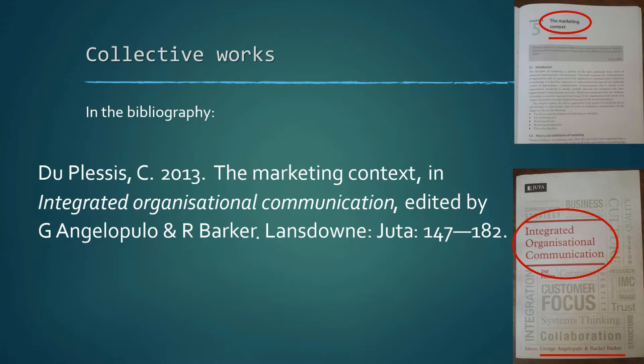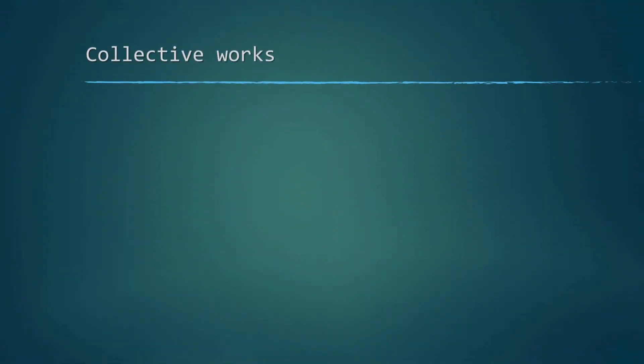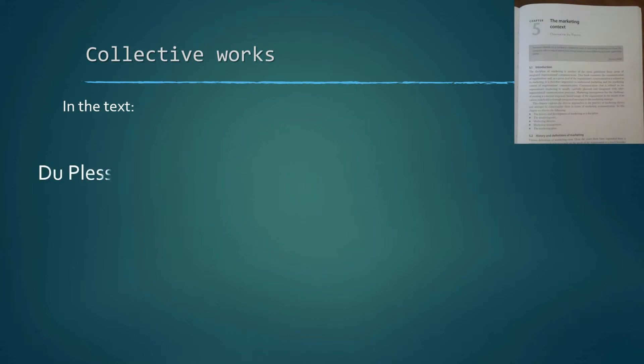That is to say, the first and last pages of this chapter as it appears in the collective work. Now, in the text of your work, you only make reference just to the author of the chapter that you are citing or referencing from.